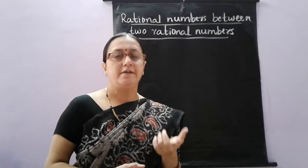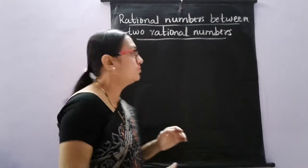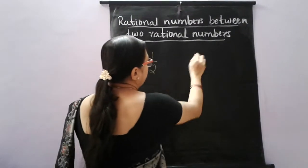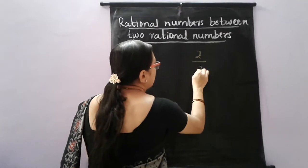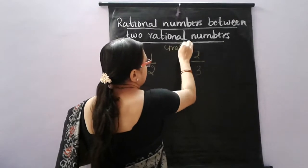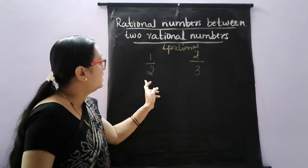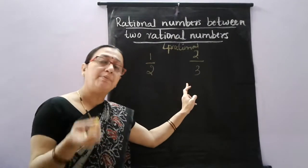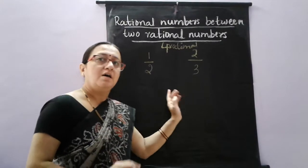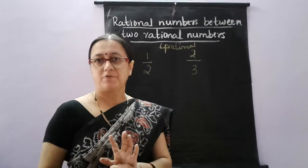Now, this method is when we get integers, whole numbers, and natural numbers as rational numbers. Suppose we get fractions only — how to find them then? For example, between 1 by 2 and 2 by 3, I want to find 4 rational numbers. Here the denominators are different, whereas in the previous examples the denominator was the same, that is 1. So we need to make the denominators equal first using the LCM method.